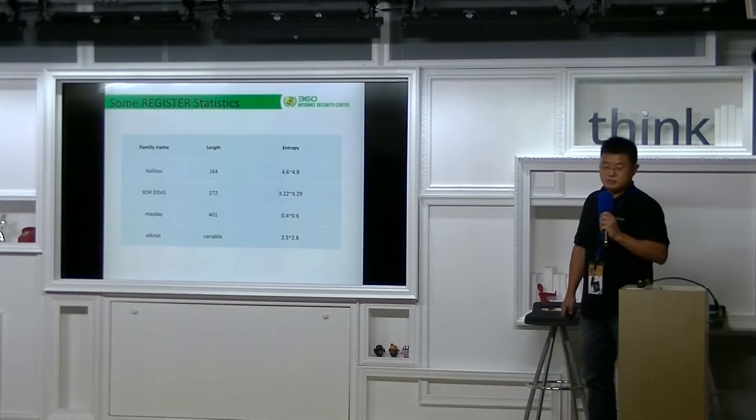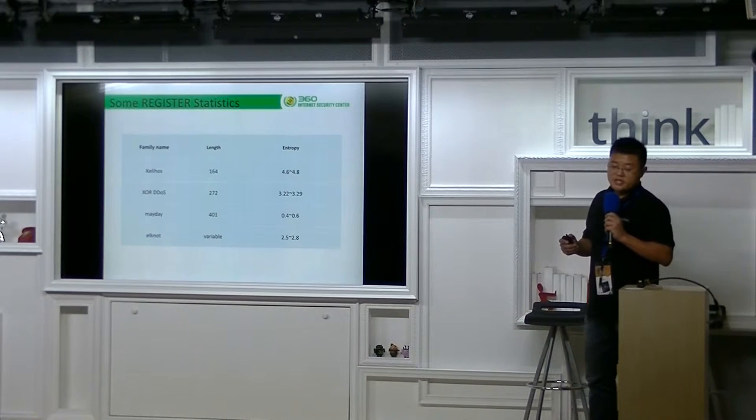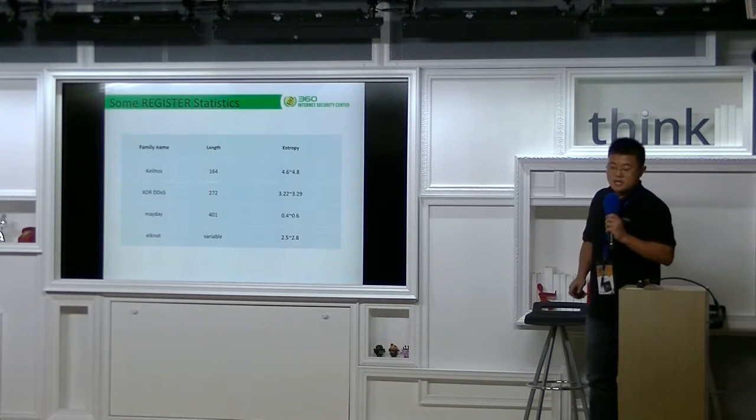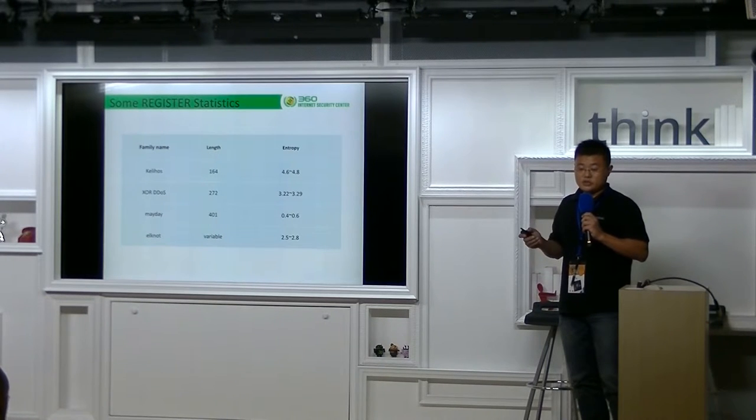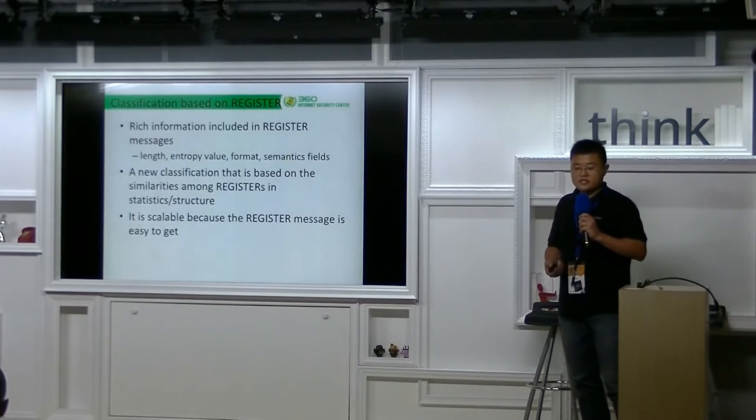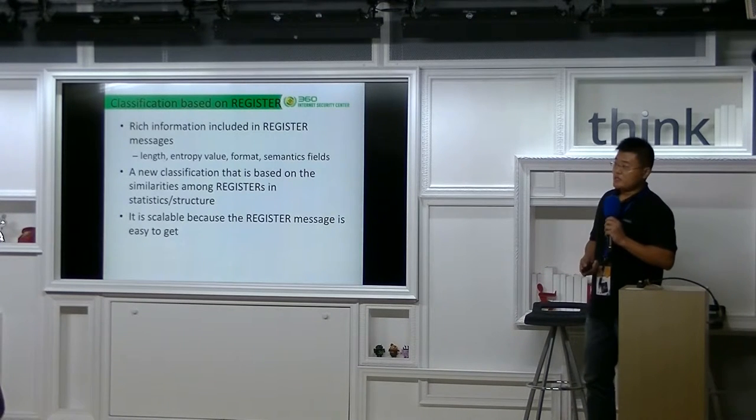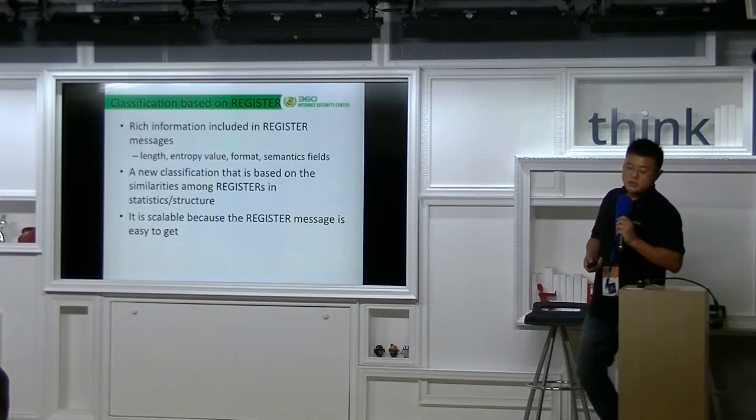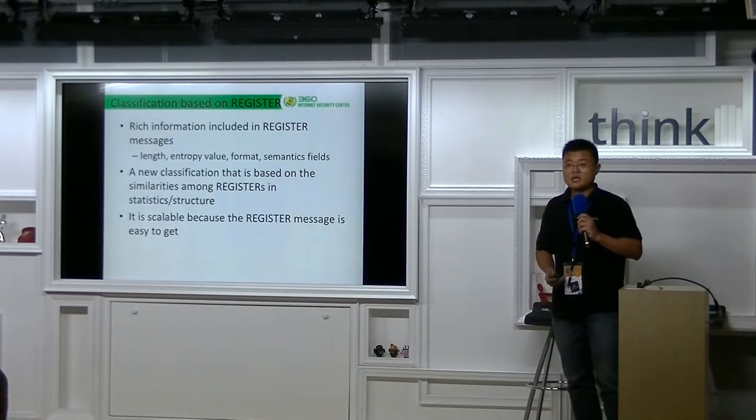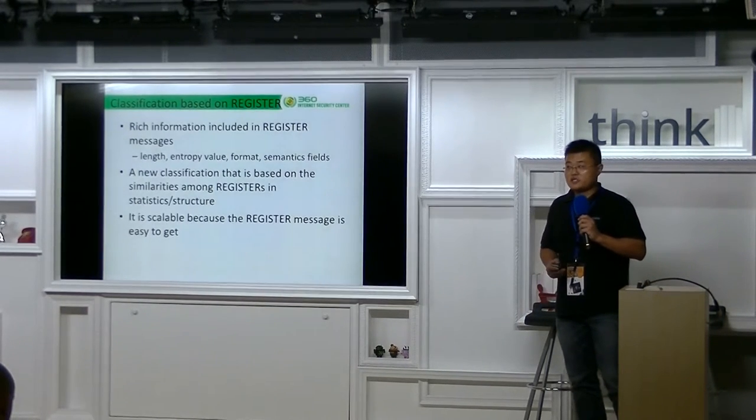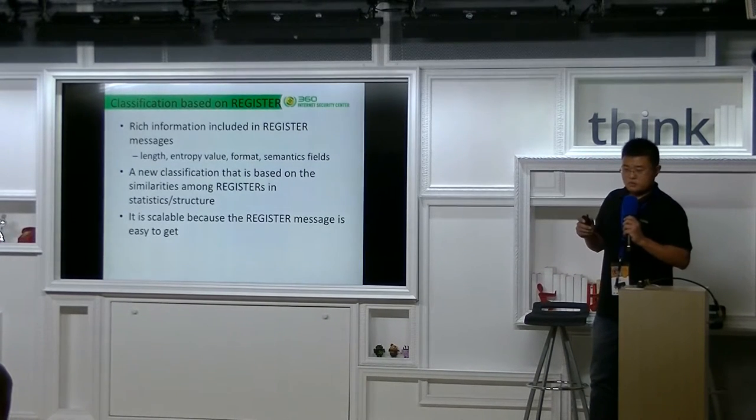Here are some examples of information about register messages. The first column is bot name. They are Kelly Hose, XRDDS, Mayday, and Elknot. Except for the last one, they all have fixed length values. And different families have different entropy ranges, but the value is very close inside the same family. You can see there is so much information included in register messages that we propose a new classification that is based on the similarities among register statistics and structure. We think our solution is extending C&C protocol based classification, but we think it's more scalable because the register message is more easy to get than the whole protocol specification.